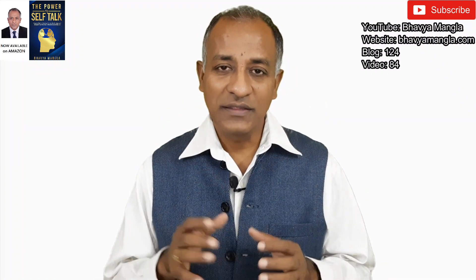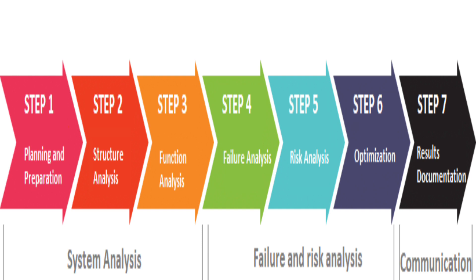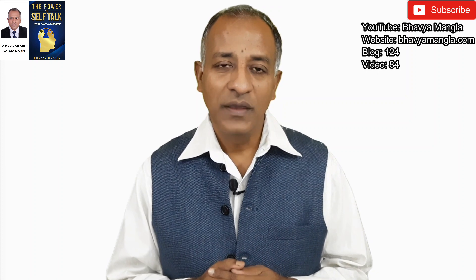There are seven key steps in FMEA as per the first edition. The first step is planning and preparation, the second is structural analysis, the third is functional analysis, the fourth is failure analysis, the fifth is risk analysis, the sixth — for which this video is made — is optimization, and the seventh is results documentation.